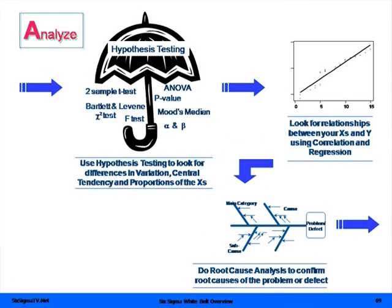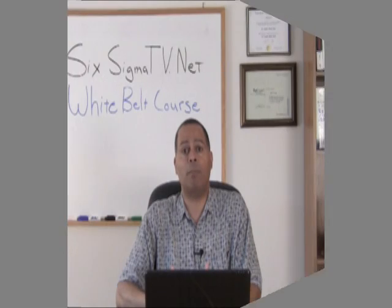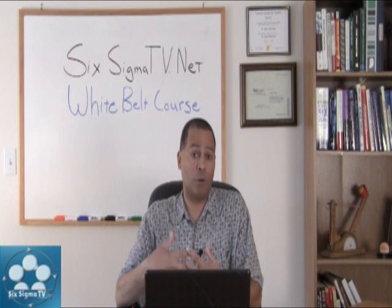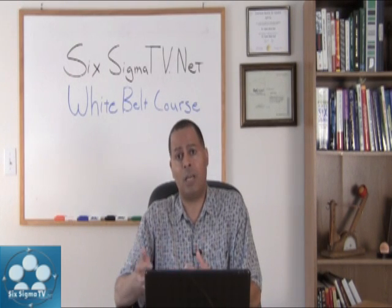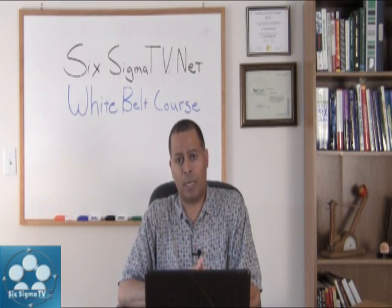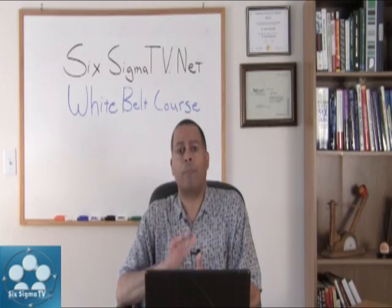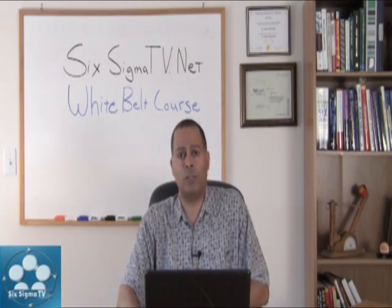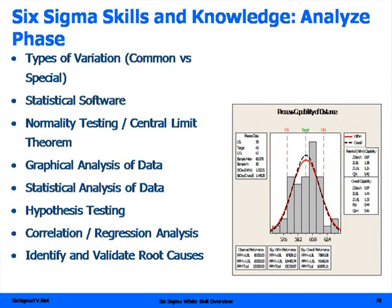We're going to use things called Hypothesis Testing, Statistical and Graphical Analysis Tools. We'll look at correlation in this phase, and then we're going to start looking at causation and cause and effect, identifying the root causes of that problem so we can focus on the improve phase. Here are some of the tools and steps you'll be going through in the analyze phase of your Six Sigma or Lean Six Sigma project.